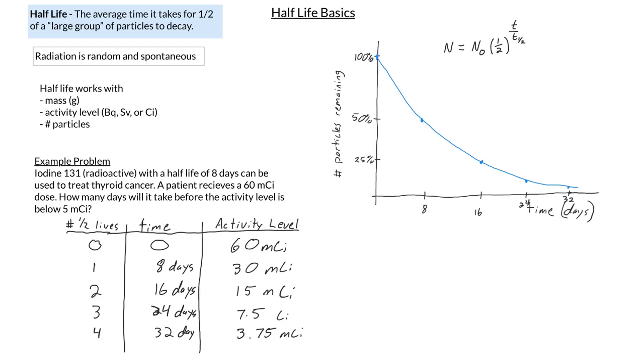And so I know to answer this question, a patient receives how many days will it take before the activity level is below 5 millicurie. Even if I don't use the equation, which we're not going to use the full equation right now, I know that we need to wait at least 32 days, would end up being my final answer there. And then we know that our activity level is below 5 millicurie.